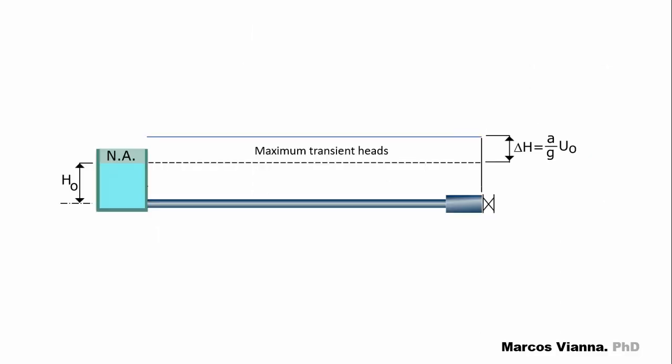An instantaneous closure of the valve, shown in this figure, will cause this head increase along the entire pipeline, and this head reduction along the entire pipeline. And how much can this head variation be?